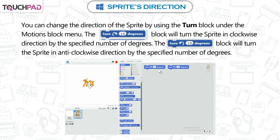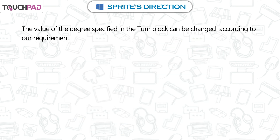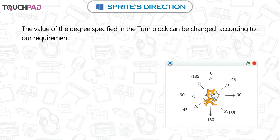The Turn 15 degrees block will turn the sprite in an anti-clockwise direction by the specified number of degrees. The value of the degrees specified in the Turn block can be changed according to our requirement.